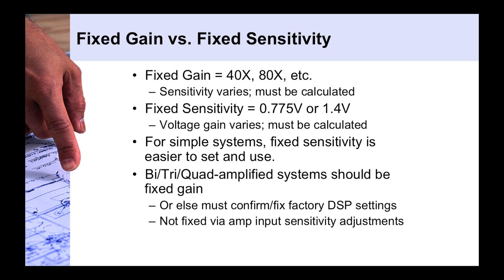So, you just have to make sure that when you are doing these bi, quad, tri-amplifying systems, make sure to use a fixed gain amplifier and across, for your low, mids and highs, use the same gain of amplification and just do the calculations accordingly.